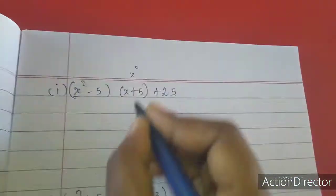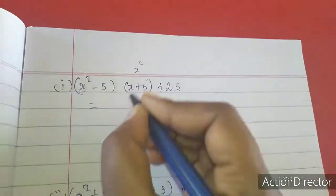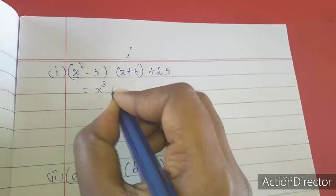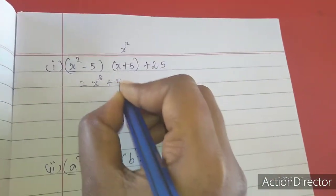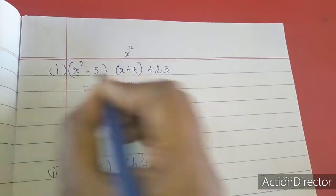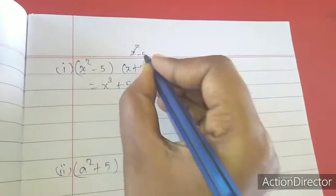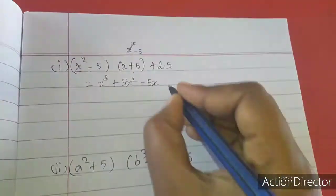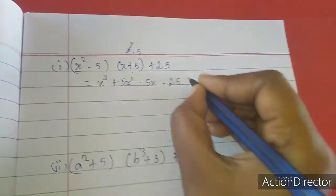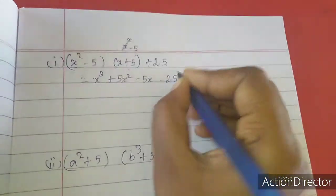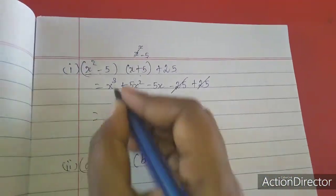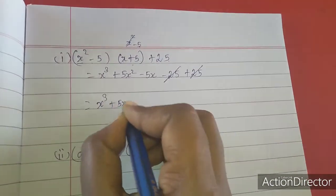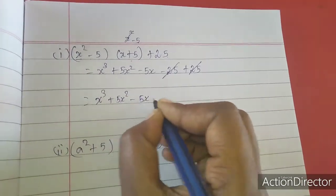First one is x squared, multiply all. x squared into x gives x cubed, plus x squared into 5 gives 5x squared. Next the minus 5 also - minus 5 into x gives minus 5x, minus 5 into 5 gives minus 25. Plus 25. So minus 25 plus 25 cancels. The answer is x cubed plus 5x squared minus 5x.